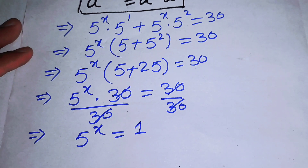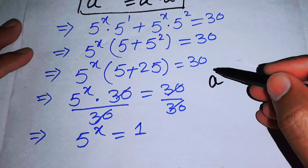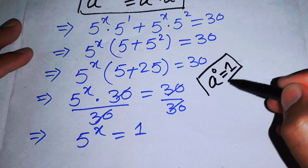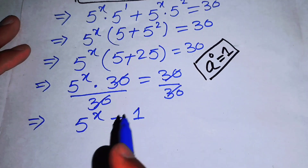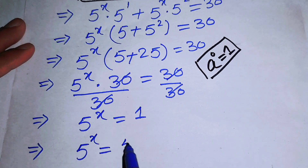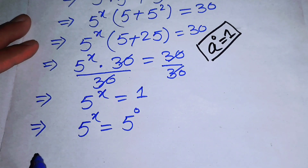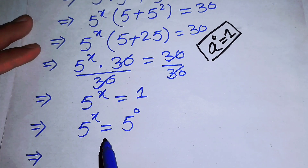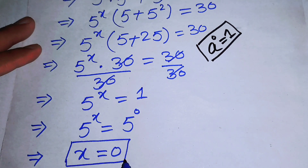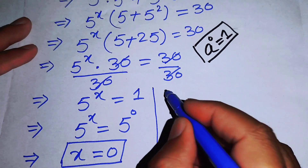We can again apply the exponential law: any number raised to the power of 0 equals 1. So we rewrite this as 5 to the power of x equals 5 to the power of 0. Since the bases on both sides are the same, the exponents must be equal, giving us x equals 0.